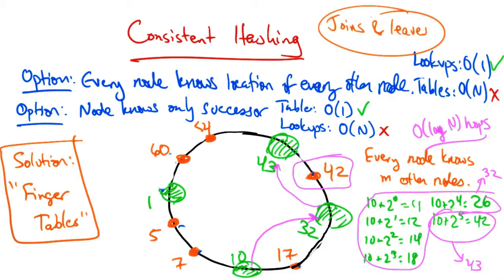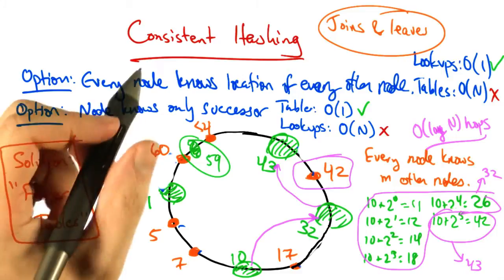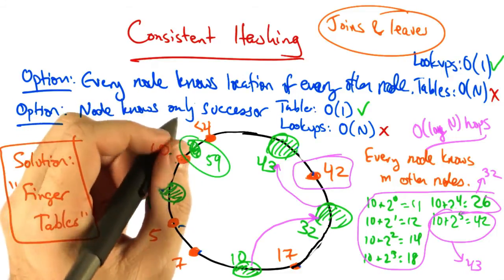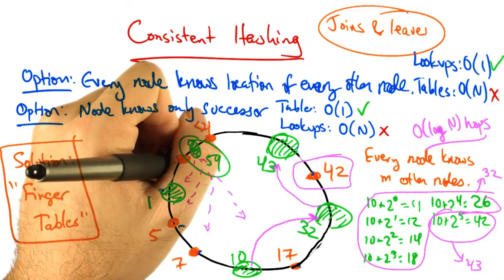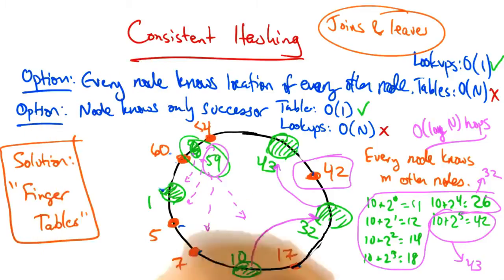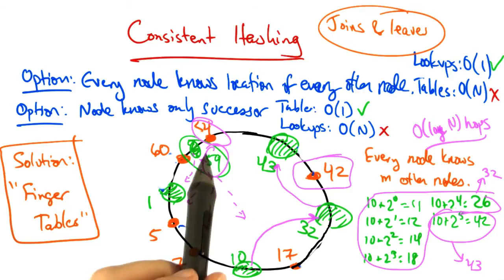Another consideration that we have to take into account is what happens when nodes join and leave the network. When a new node joins, we first have to initialize the fingers of this new node. Then we must update the fingers of existing nodes, so that they know that they can point to the node with the new ID. And finally, the third step is to transfer the keys from the successor to the new node.